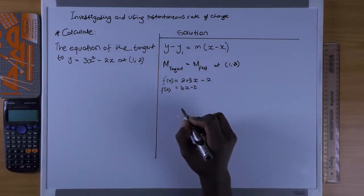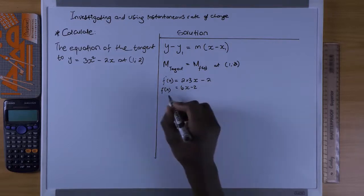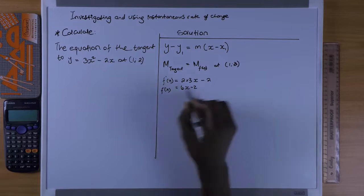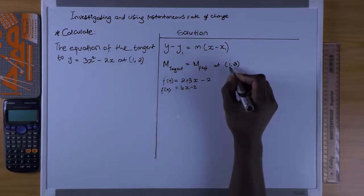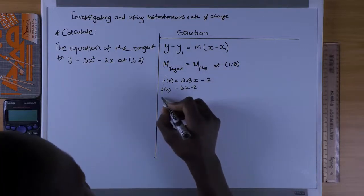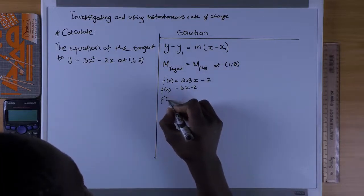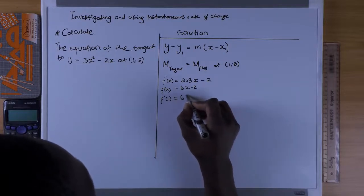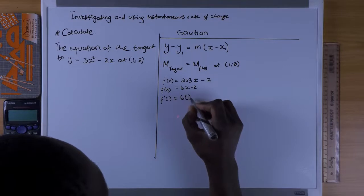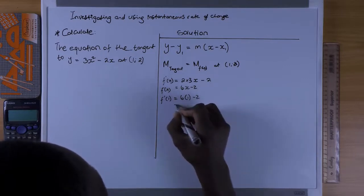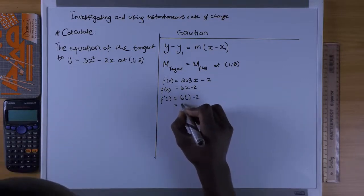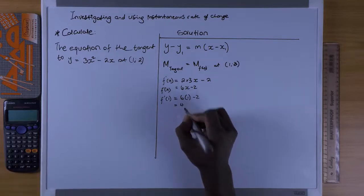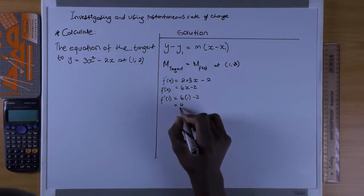It is very important that we find the gradient at x = 1, because that is where the tangent meets the curve. Substituting: 6 times 1 is 6, minus 2 gives us a gradient of 4.